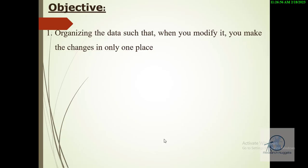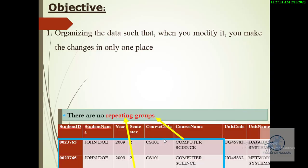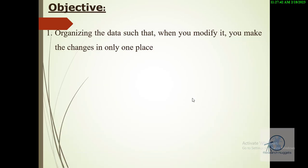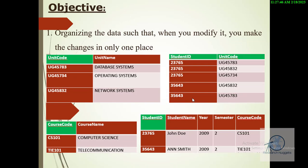The other objective is that we need to organize our data in such a way that when we are modifying or making changes to that particular data, we only do it from one place and only once. For instance, if you look at that particular relation, if we needed to change the name of the course, we would be forced to make it three times, as the course name Computer Science is appearing more than once. Similarly, if we needed to amend the name of the student John Doe, we might be forced to do it three times. That shows that that database isn't normalized. If it was normalized, we should only be in a position to make changes from one place and only once.